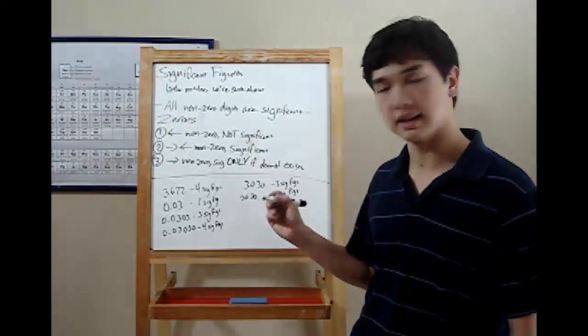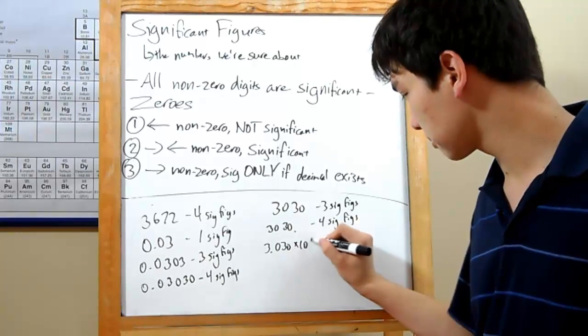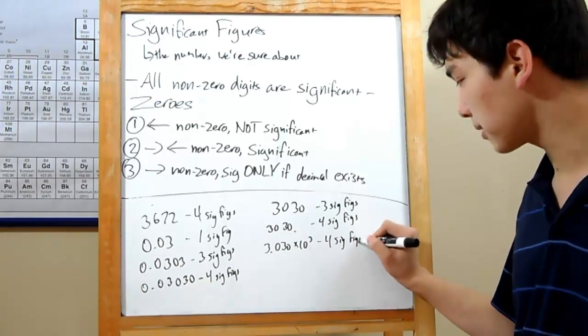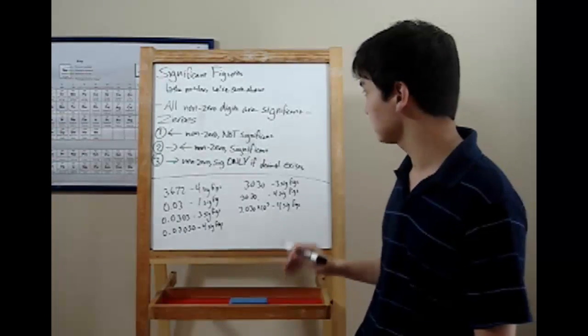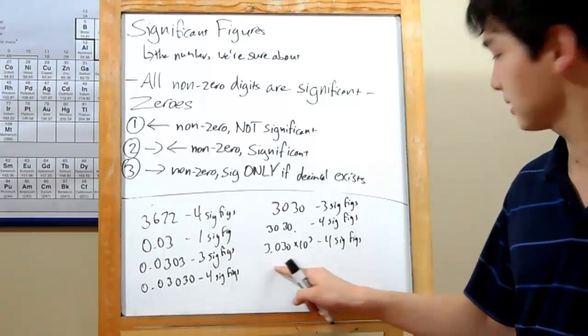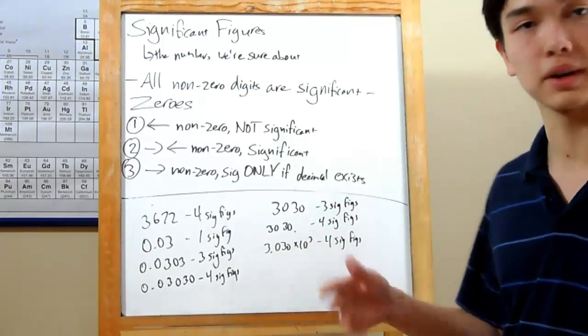Preferably, you could write it in scientific notation. 3.030 times 10 to the third power. That's still four sig figs. The 10 to the third power doesn't count in scientific notation towards the number of significant figures. And here, the decimal point's obvious. It's right here in the middle of the number. So, your teacher will be likely to spot it. Unlike here, where it could be missed.